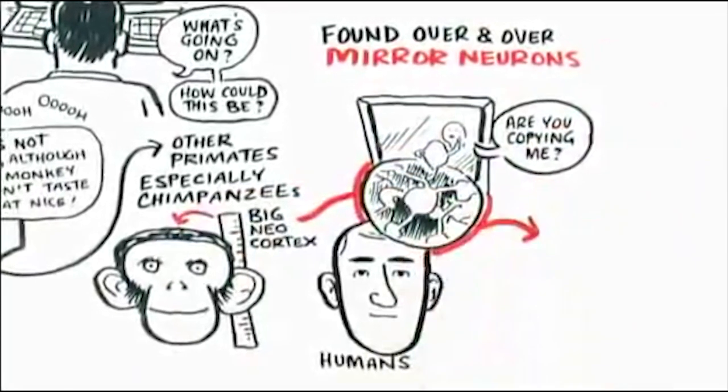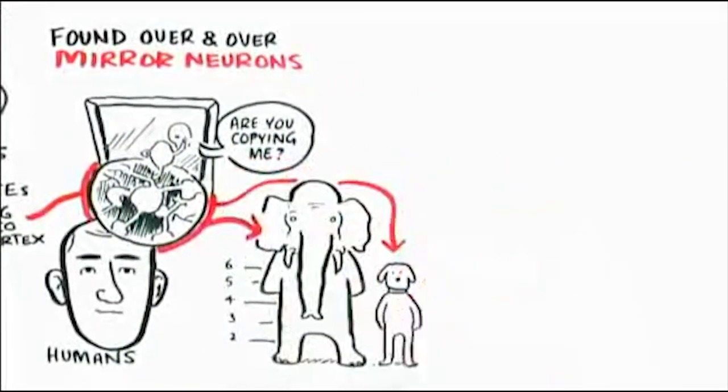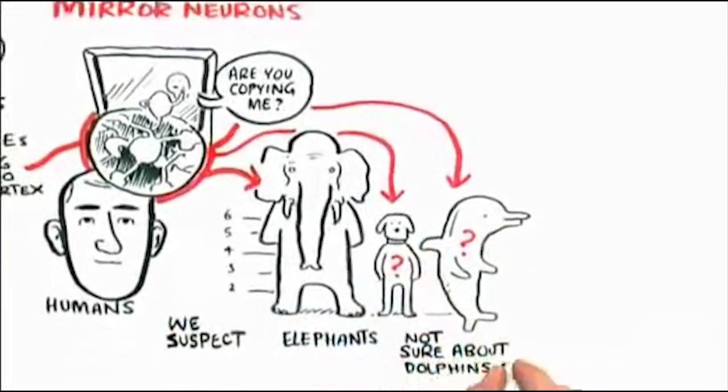And that is that we are apparently soft-wired, some of the primates, all humans, we suspect elephants, we're not sure about dolphins and dogs, we've just begun.